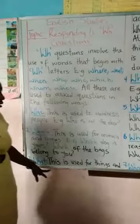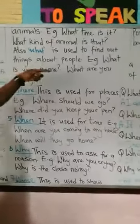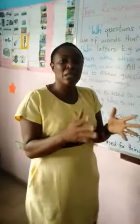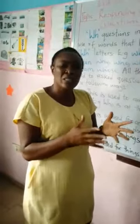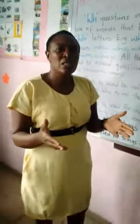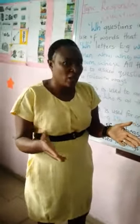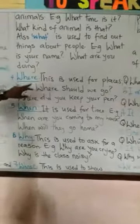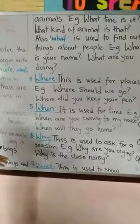Number three: WHAT — this is used for things and animals. For example, 'What time is it?' and 'What kind of animal is that?' Also, what is used to find out things about people — when you want to know what is happening in somebody's life. For example, 'What is your name?', 'What colour is your chair?', 'What are you doing?', 'What did you do?', 'What are you eating?'